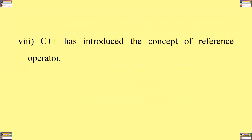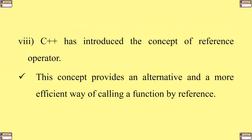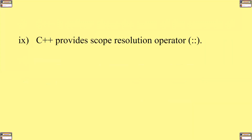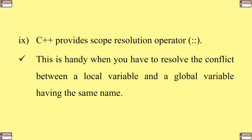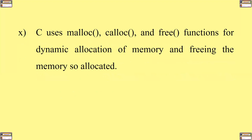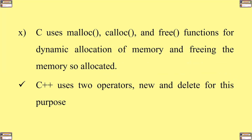Number eight, C++ has introduced the concept of the reference operator. This concept provides an alternative and more efficient way of calling a function by reference. Number nine, C++ provides a scope resolution operator. This is handy when you have to resolve the conflict between a local variable and a global variable having the same name. In C, malloc, calloc, and free functions are used for dynamic allocation and freeing of memory, while C++ uses two operators — the new and delete operators — for the same purpose.